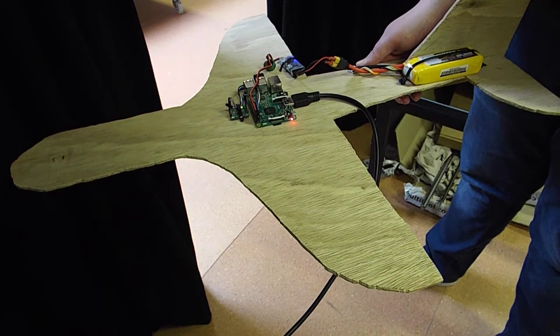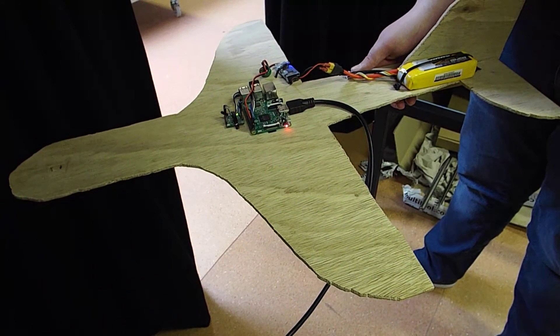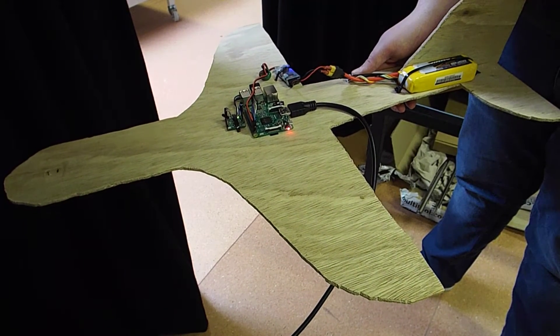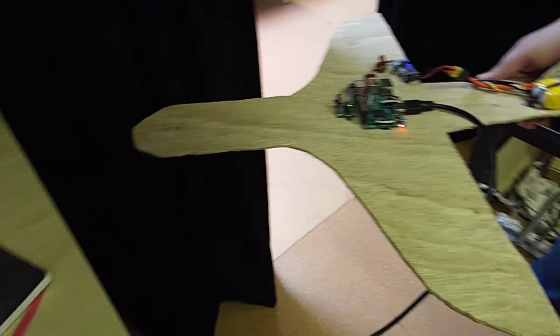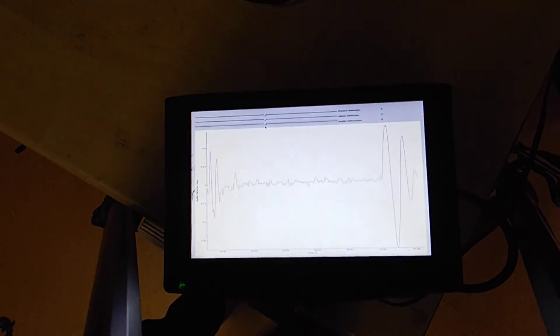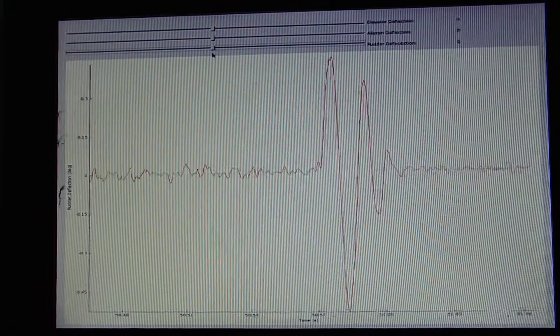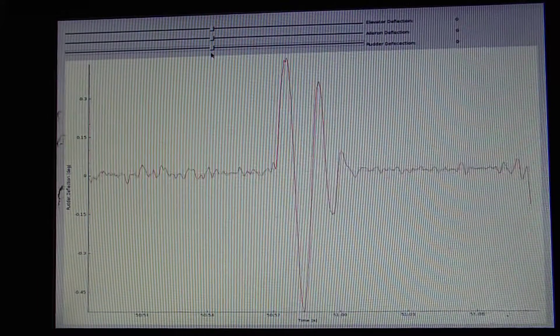We're now going to demonstrate how the stability augmentation system's input is displayed to the pilot. So, we've got Kyle Kinley holding the plane in steady level flight. If we move down to the graphical interface and have a look and see what the pilot would see on his display. So, if Kyle could please put in a yaw for us just now.